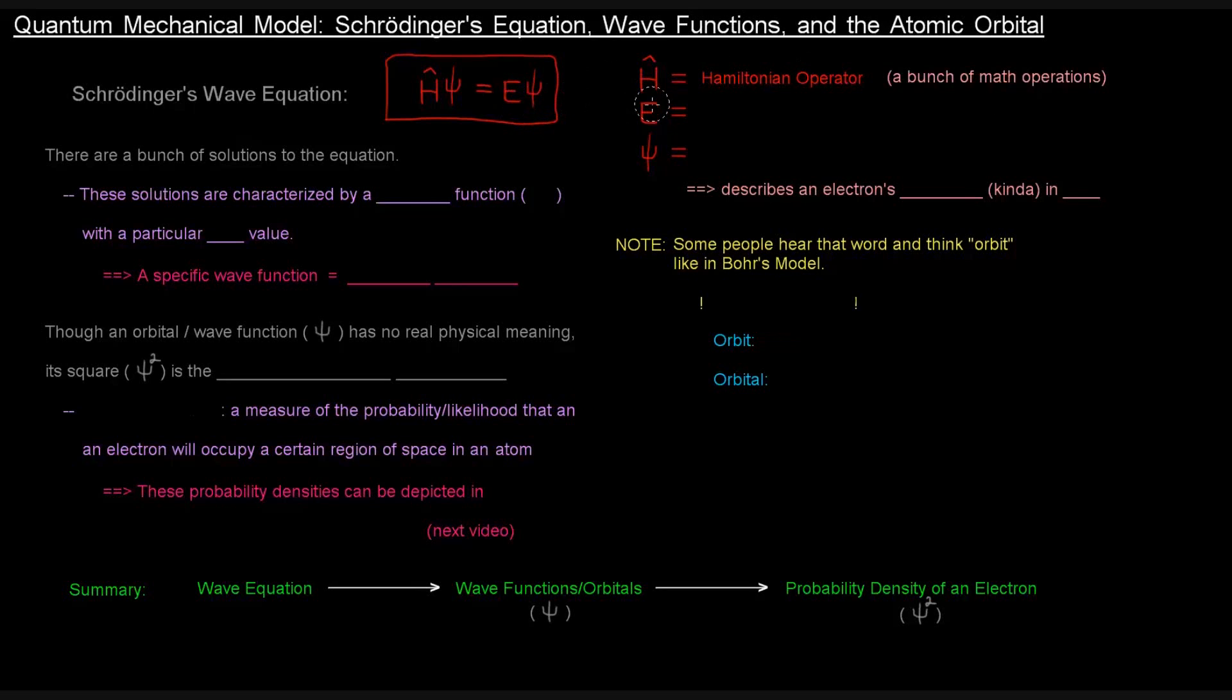So, the E represents the atom's energy, and the symbol psi, the Greek letter psi, represents a wave function. And a wave function describes an electron's location in 3D.